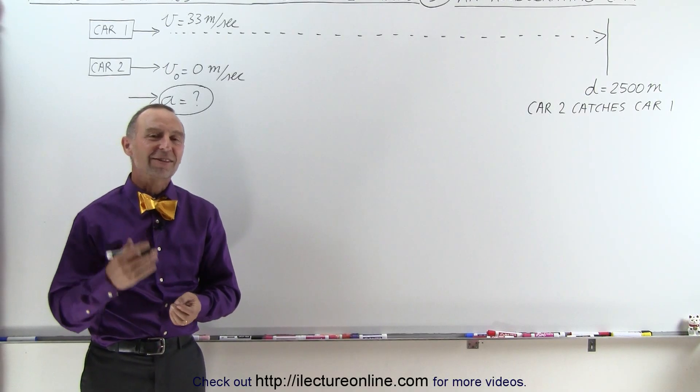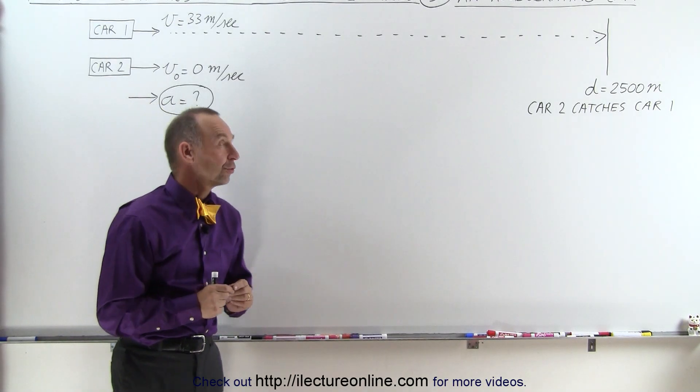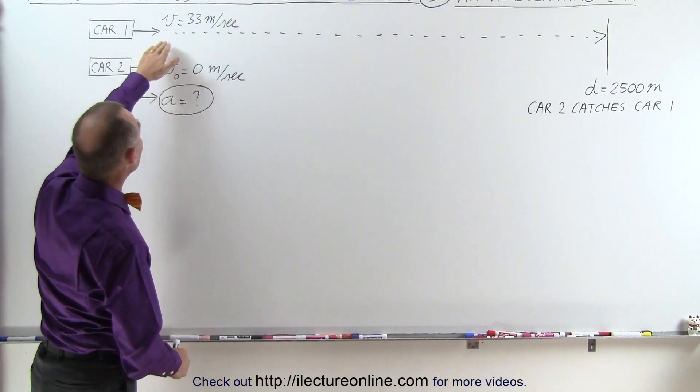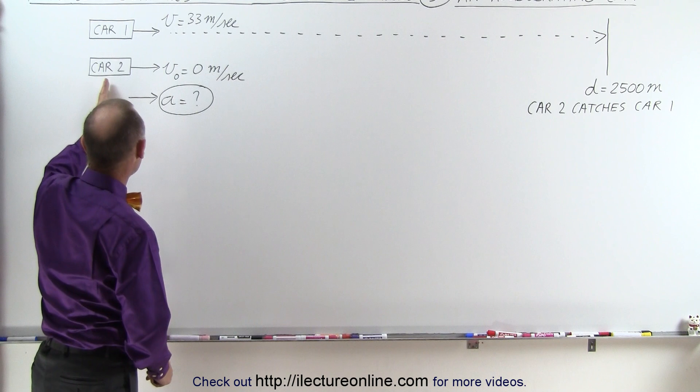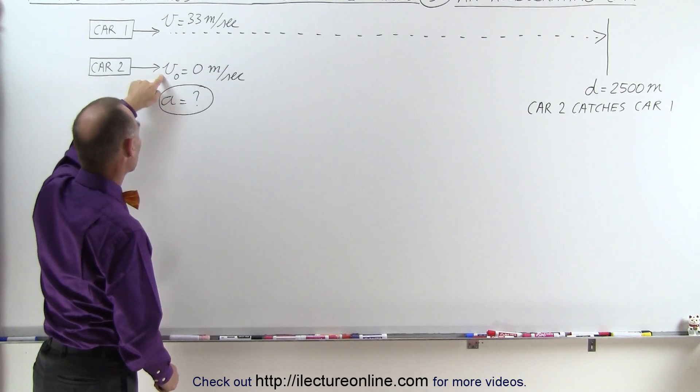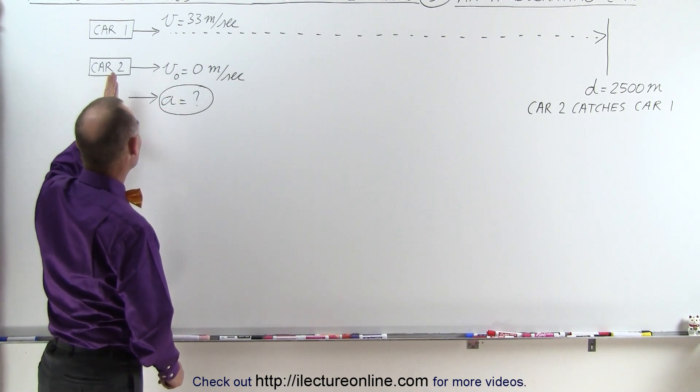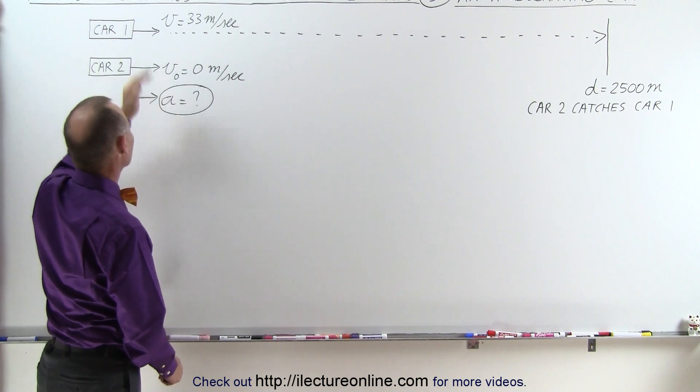Welcome to Electronline. Our next example deals with two cars. The first car is traveling at a constant speed of 33 meters per second and passes a second car that's stationary, so starting from rest, and begins to accelerate the moment the first car passes by.